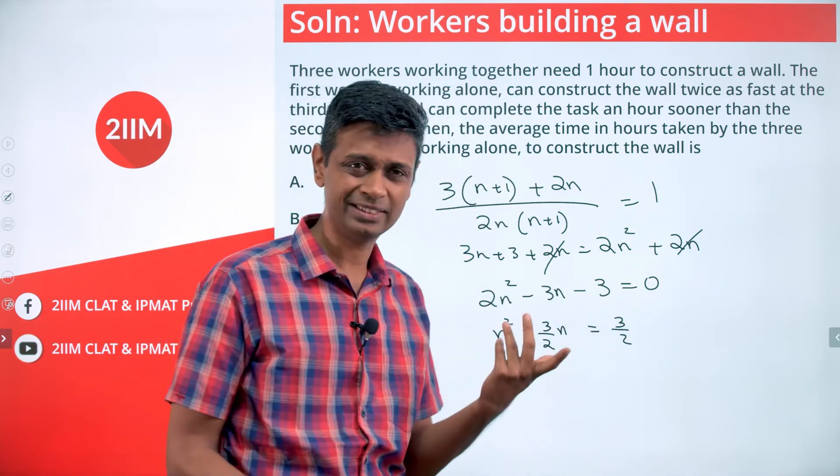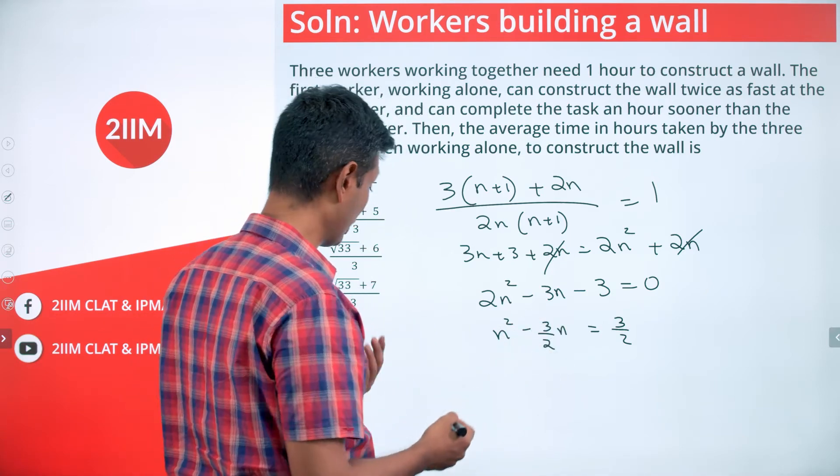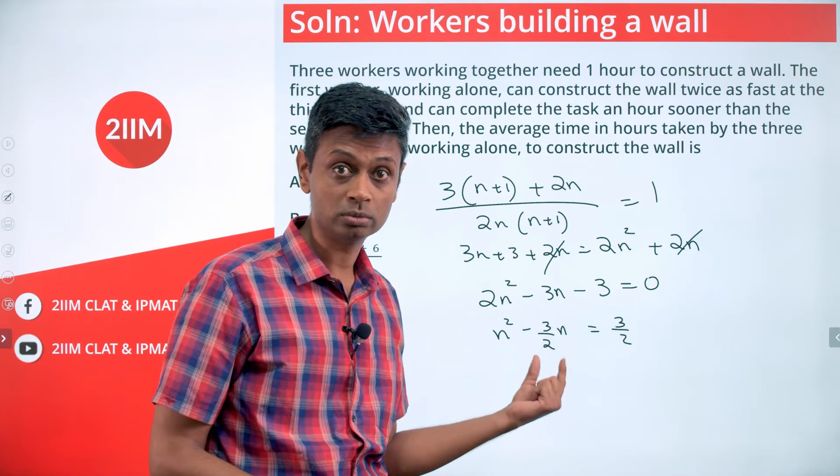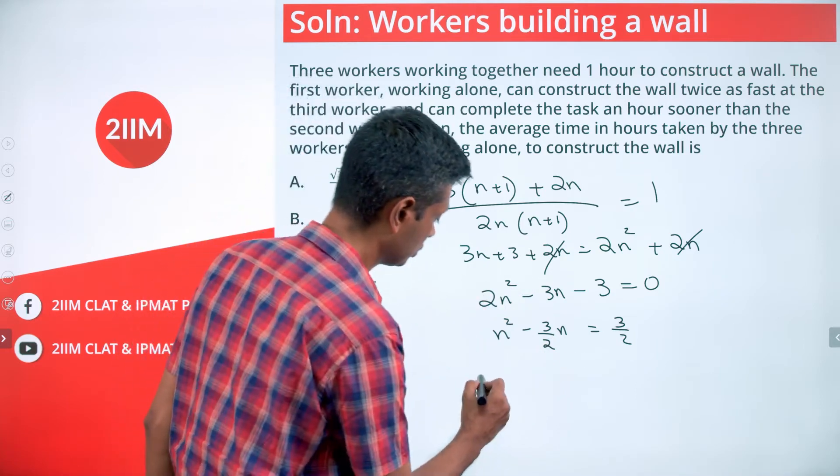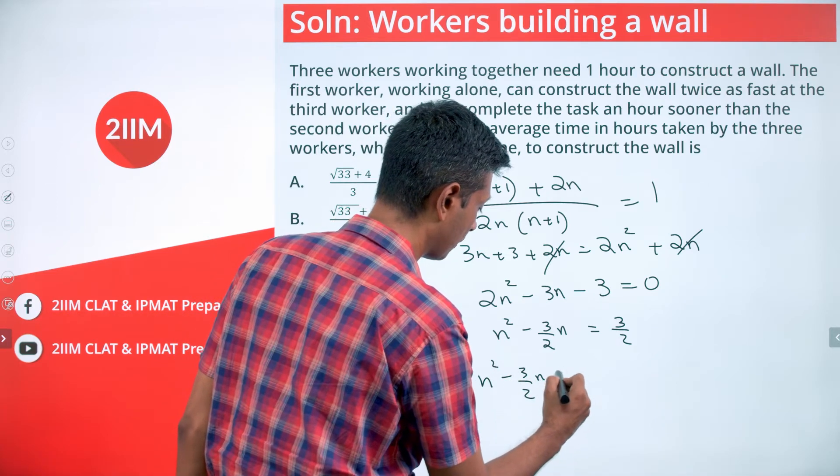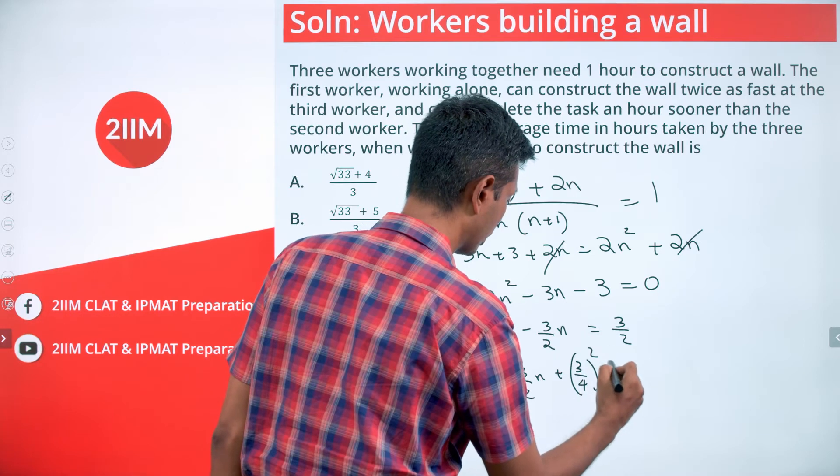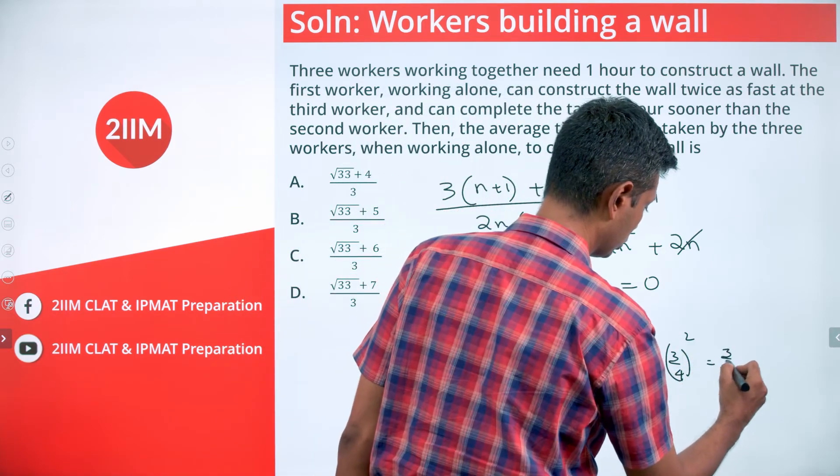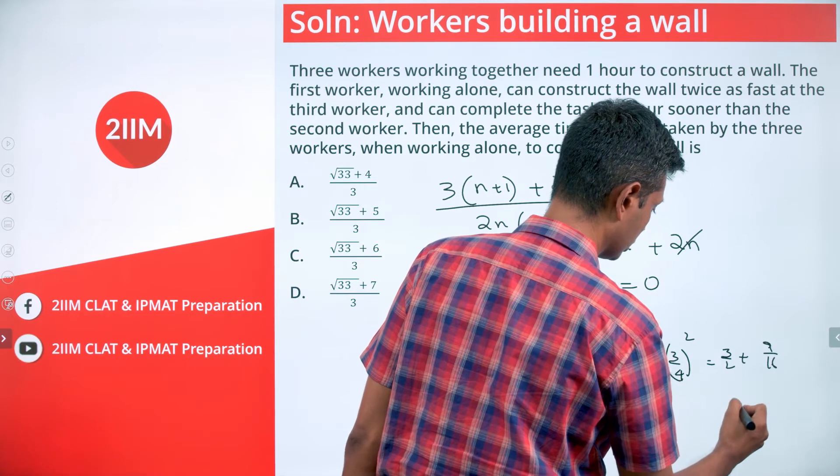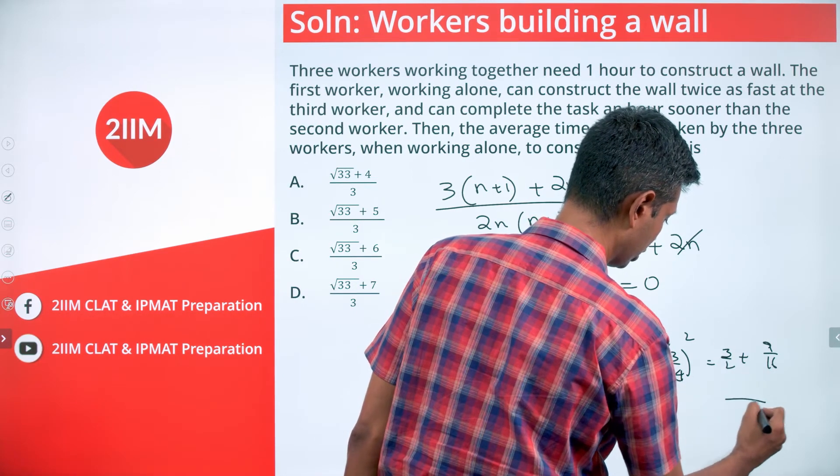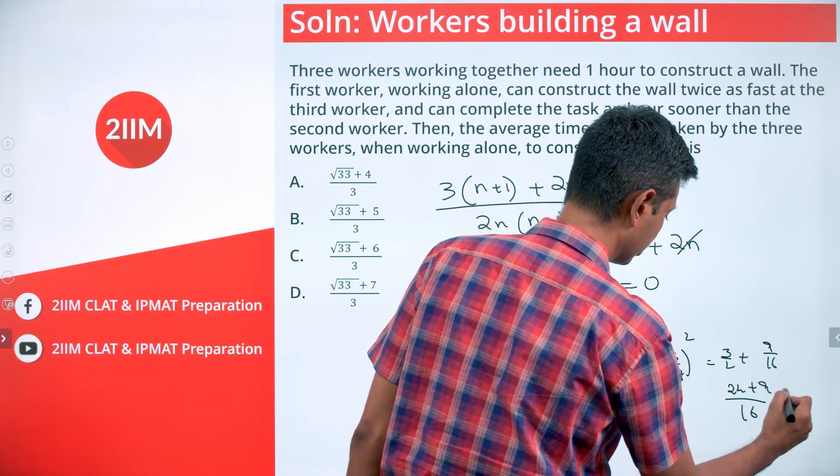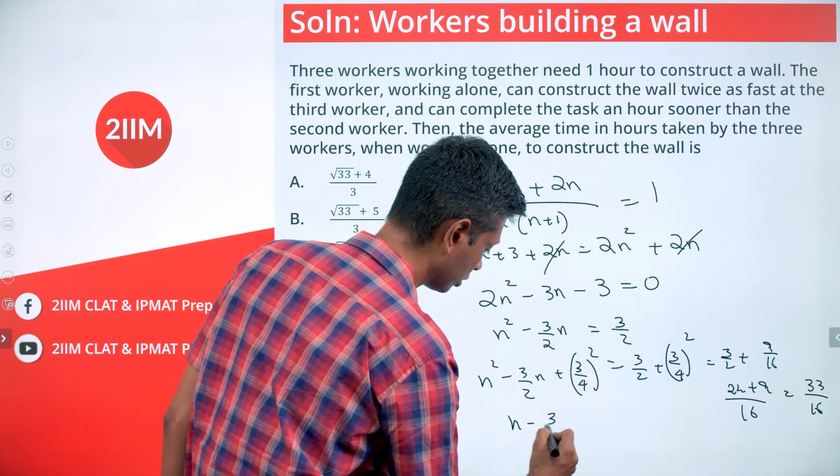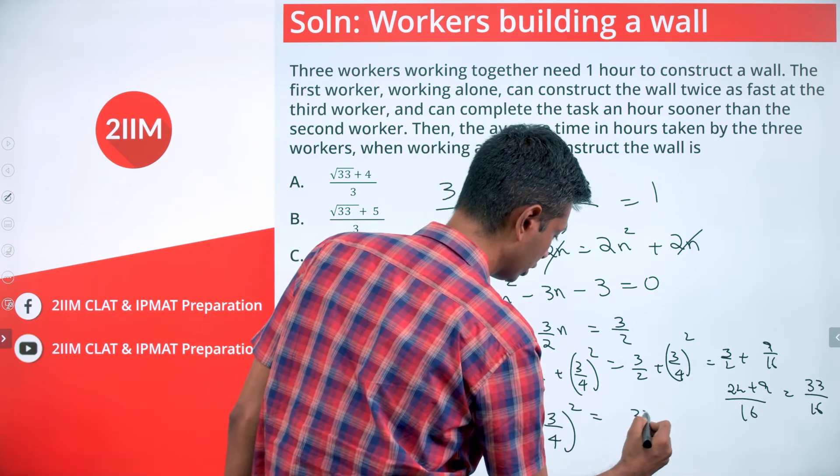So I'm going to think of this as n^2 - (3/2)n = 3/2. Why? Because dealing with n^2 is easier. And so (3/2)n, we know (a-b)^2 = a^2 - 2ab + b^2. So 2a should be minus 3/2, or we're thinking about minus 3/4 whole square. So n^2 - (3/2)n + (3/4)^2 equals 3/2 + 9/16, or 24/16 + 9/16 = 33/16.